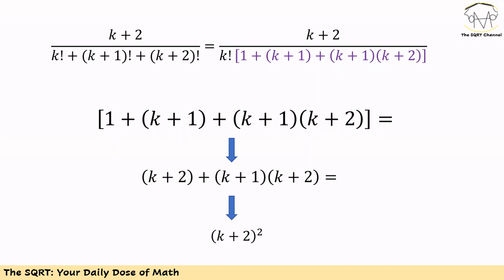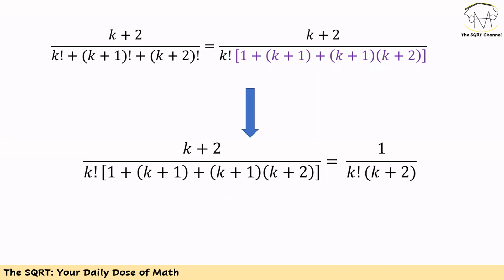The expression in the denominator can be simplified. First, we write 1 plus k+1 as k+2, giving us k+2 plus (k+1)(k+2). We can then factor out k+2, and the second factor becomes k+2 again. So the purple expression simplifies to (k+2) squared.